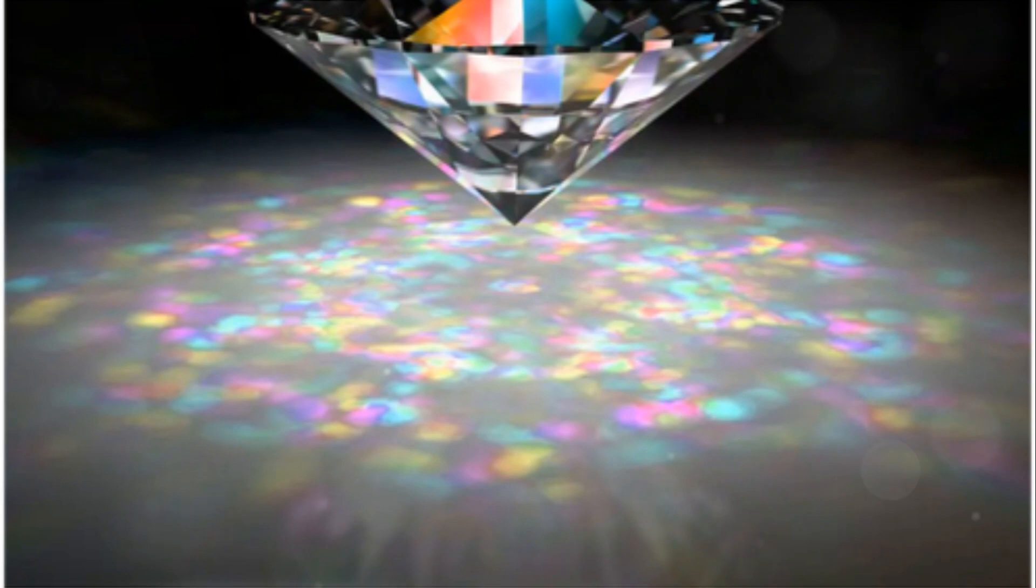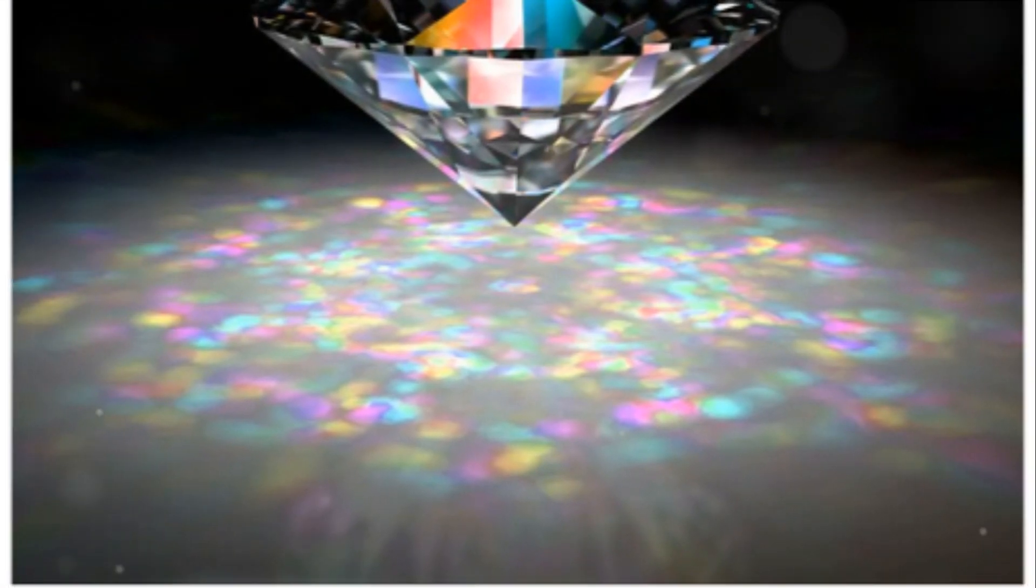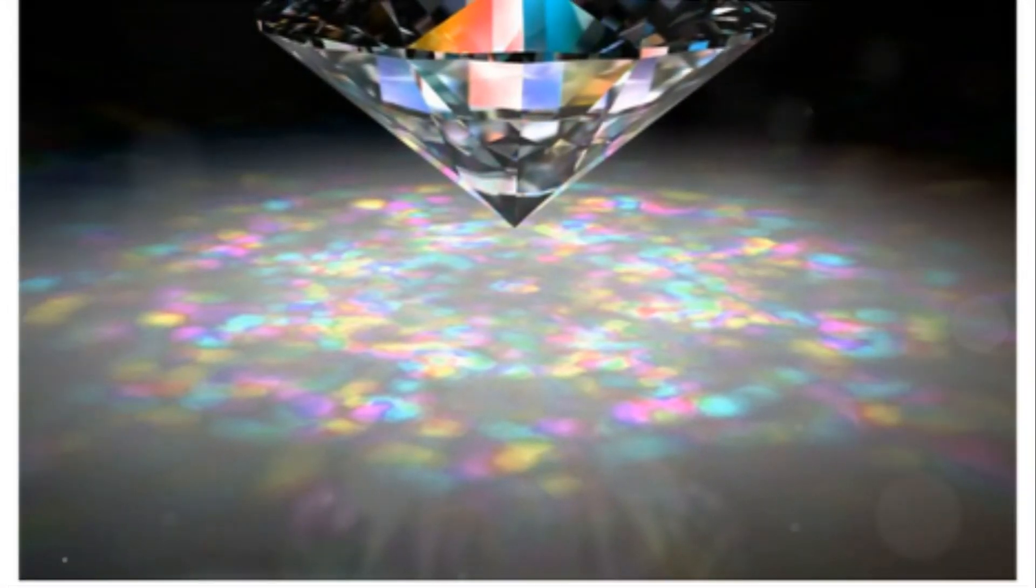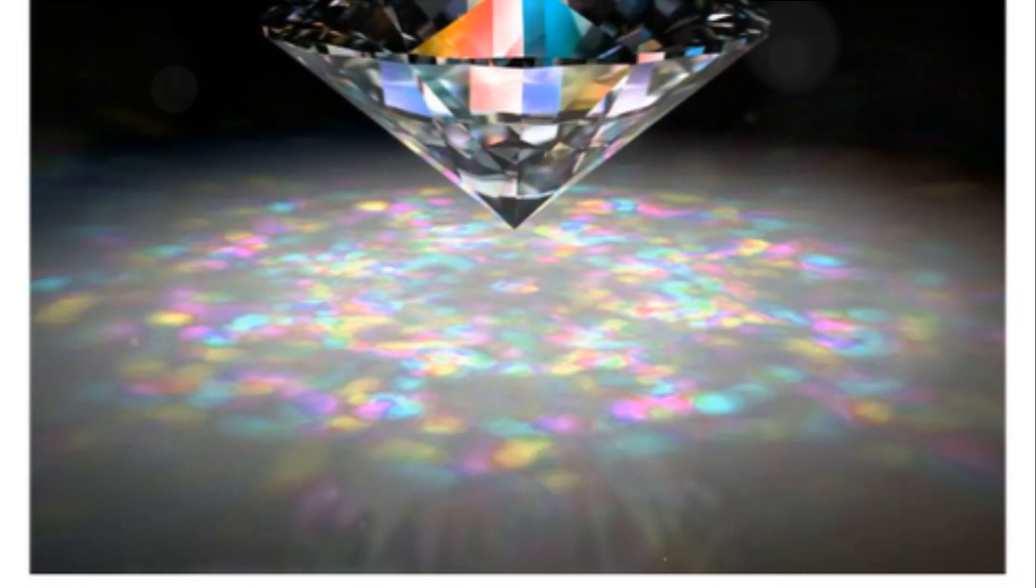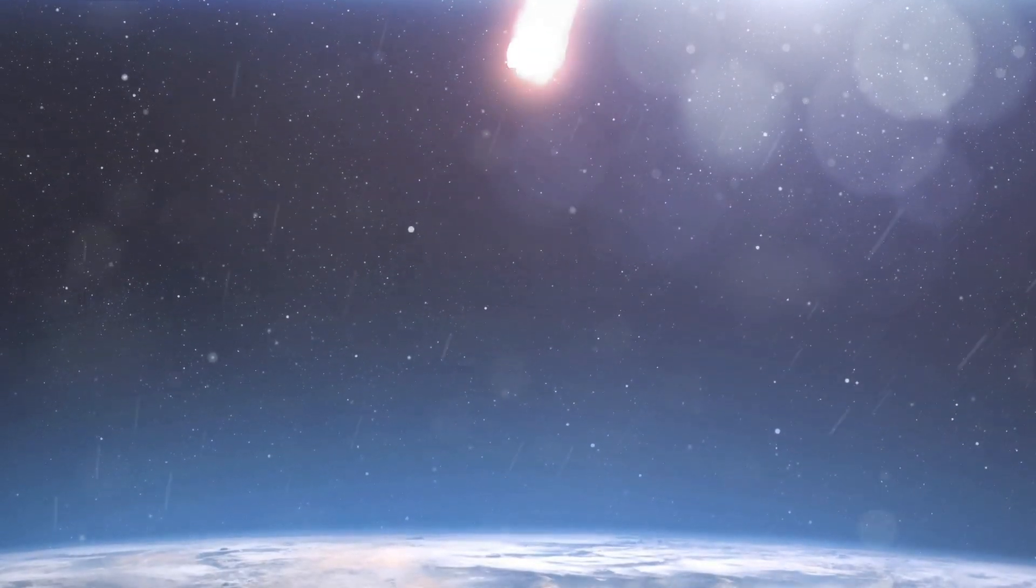Upon impact with the Earth's surface, the intense pressure exerted on the inner layers exceeds any natural process on Earth. This pressure causes graphite to compress into a crystalline structure that surpasses the hardness of diamonds.